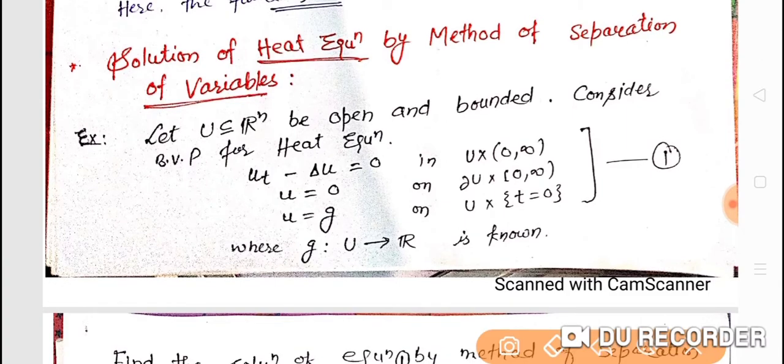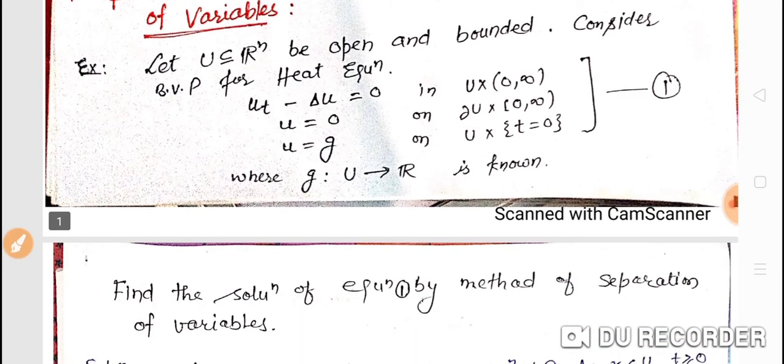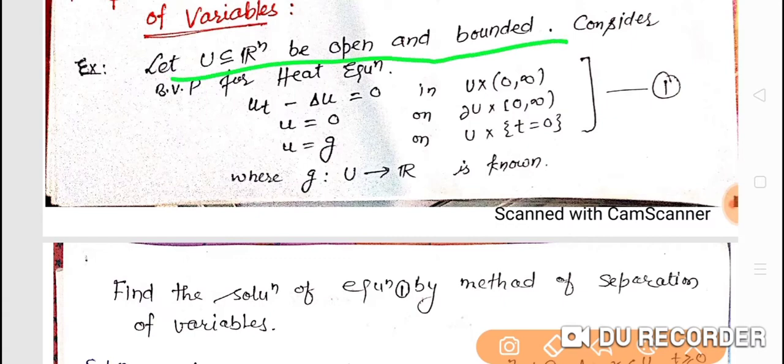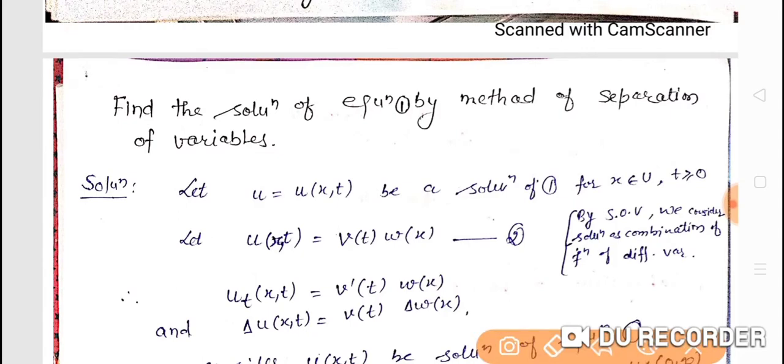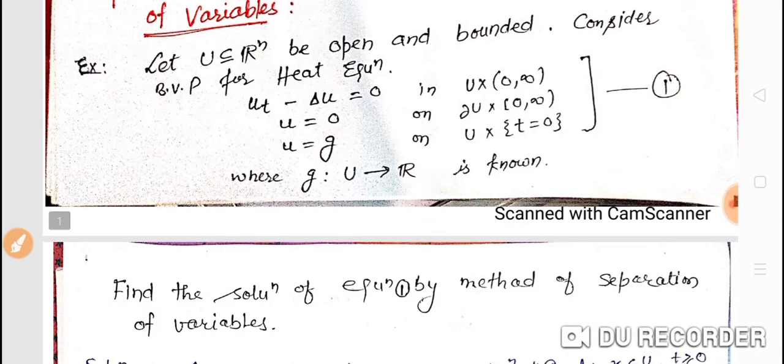So first we will solve the heat equation by separation of variables. The statement is: let u be a subset of R^n, open and bounded. You have to find the solution of the boundary value problem for heat equation. The problem is: u_t minus delta u equals zero in u cross zero to infinity, u equals zero on boundary cross zero to infinity, and u equals g as initial condition.